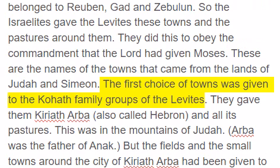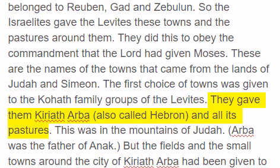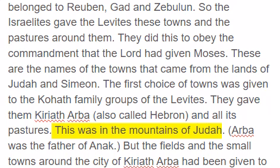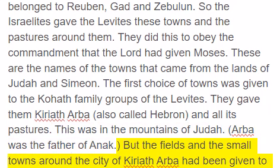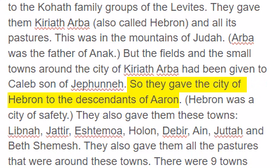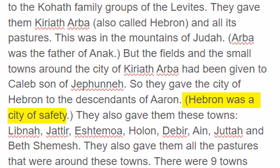These are the names of the towns that came from the lands of Judah and Simeon. The first choice of towns was given to the Kohat family groups of the Levites. They gave them Kiriath Arba, also called Hebron, and all its pastures. This was in the mountains of Judah. Arba was the father of Anak. But the fields and the small towns around the city of Kiriath Arba had been given to Caleb son of Jephunneh. So they gave the city of Hebron to the descendants of Aaron.